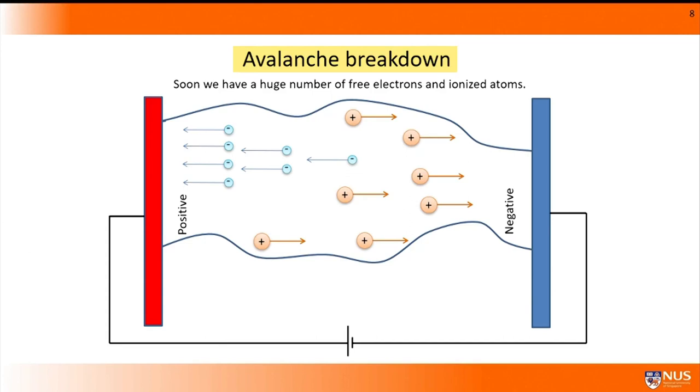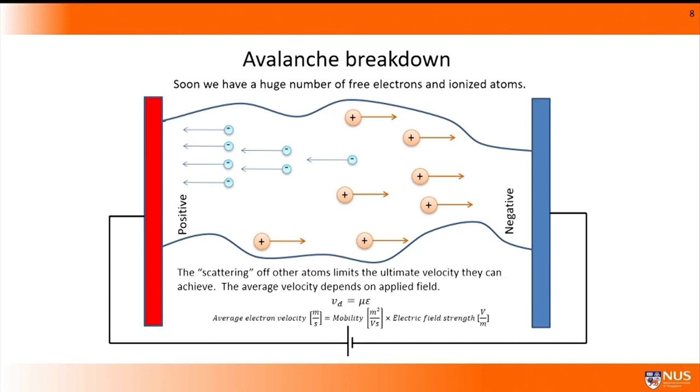Of course, an electron in this situation does not accelerate forever. On average, each electron will accelerate through a certain distance before striking a new atom, which slows it back down. This is called scattering. So although each electron accelerates, then stops, then accelerates, and then stops again, and so on, it's possible to think about each electron as having an average velocity.